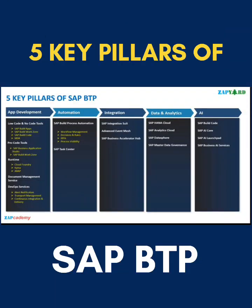Here are the five key pillars of SAP BTP: app development, automations, integrations, data analytics, and AI. All these things — whatever you can see here listed down against the app development, automation, and other pillars — these are the different services that SAP is selling to customers.